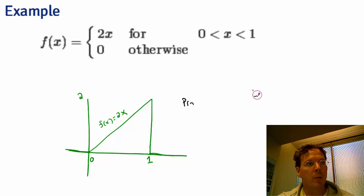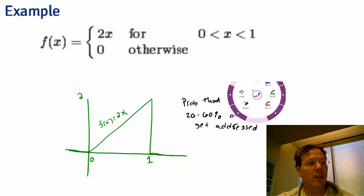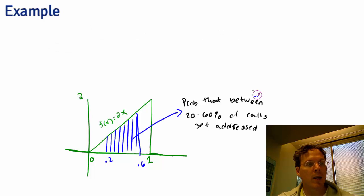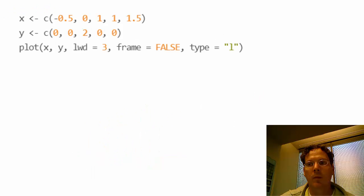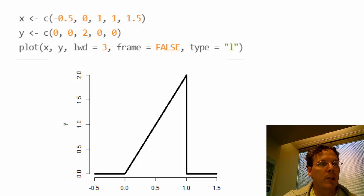This means the probability that between 20% and 60% of the calls get addressed that day is given by a certain area under the curve. Let's ask: is this a mathematically valid density? I've plotted the probability density function here.